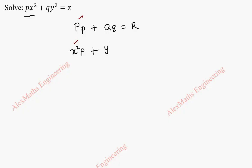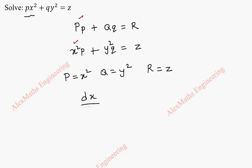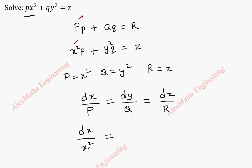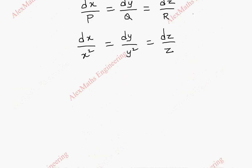In the same way, the second term is y square times q equal to z. So capital P is x square, capital Q is y square, and capital R is z. To get the solution we have to solve dx by capital P equal to dy by capital Q equal to dz by capital R. Replacing P, Q, and R we get dx by x square equal to dy by y square equal to dz by z.